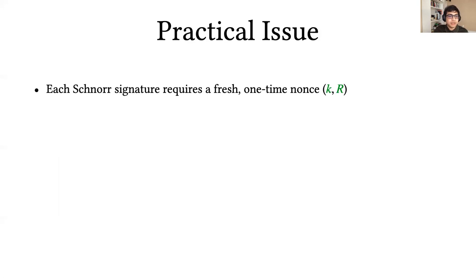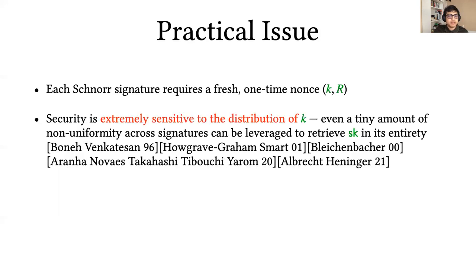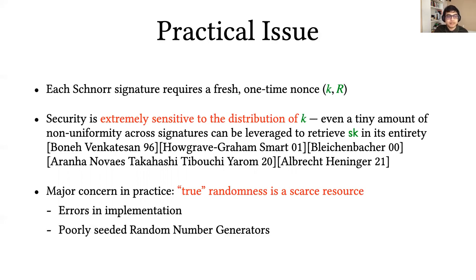However, it turns out that security of Schnorr signatures is extremely sensitive to the distribution of K. That is, even a tiny amount of non-uniformity can be leveraged to completely retrieve the signing key and break security. This started with the hidden number problem formulated by Boneh and Venkatesan all the way to modern techniques that can be used to mount attacks with practical running times. This is a major concern in practice because there are a variety of engineering problems that make acquiring fresh entropy quite difficult.